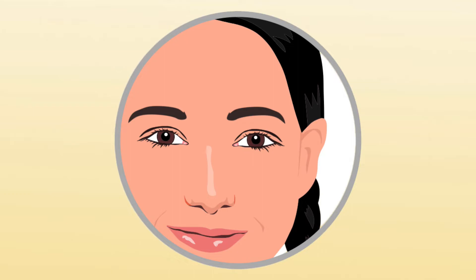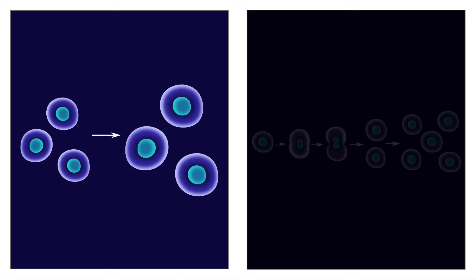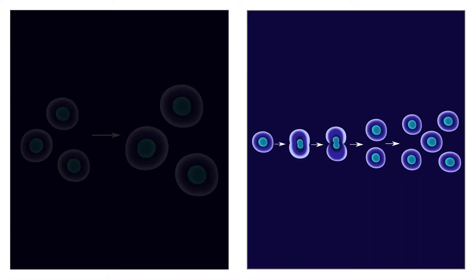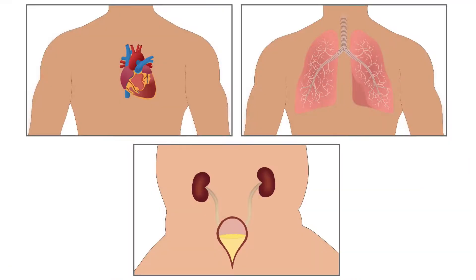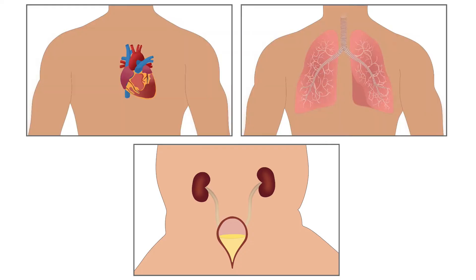Vitamin A is important for the repair and maintenance of the skin. It also supports cell growth and division, and plays a critical role in the formation and maintenance of various organs such as the heart, lungs, and kidneys.